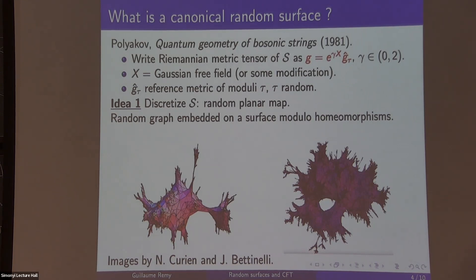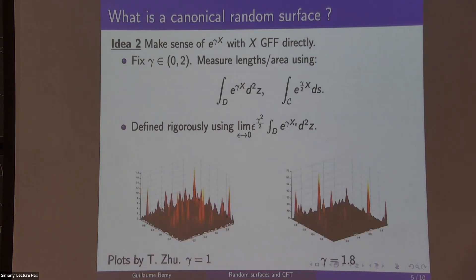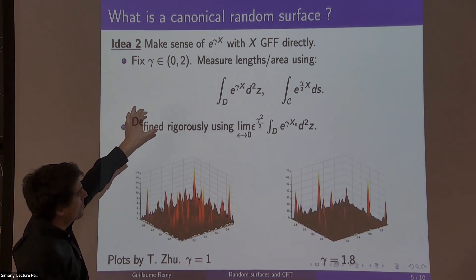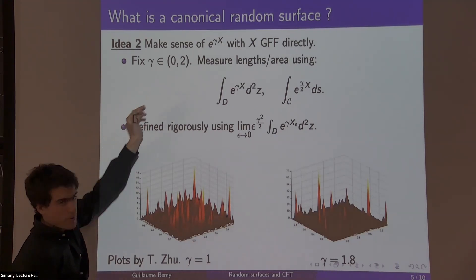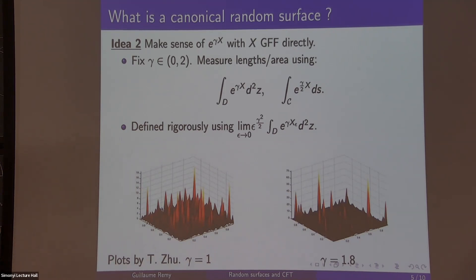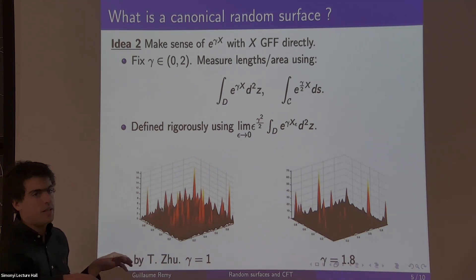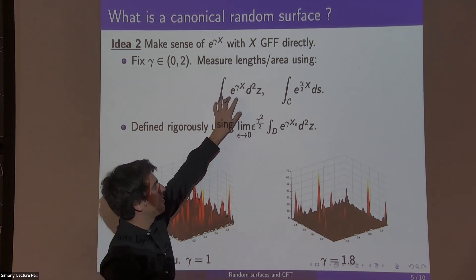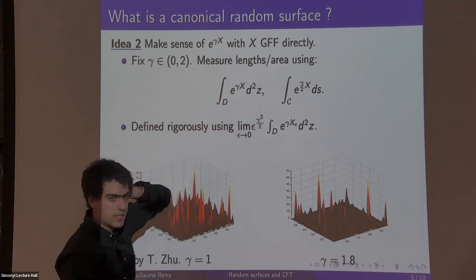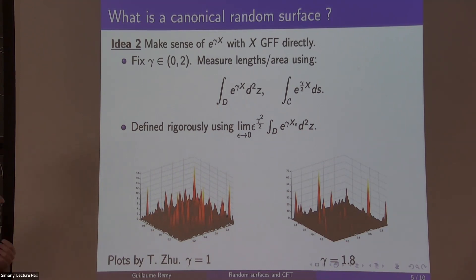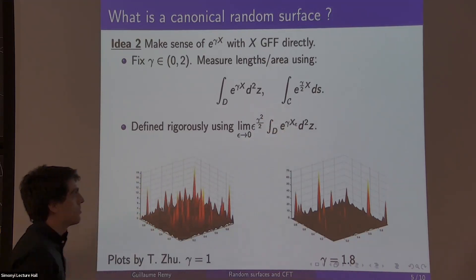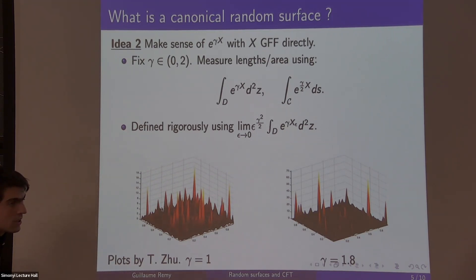What I worked on is making sense directly in the continuum of the geometry given by this exponential of the Gaussian free field. So you fix a parameter gamma in 0, 2. Very concretely, you have a domain D in the plane, and you want to assign to it a random area. You integrate the Lebesgue measure over D with this density e to the gamma X.